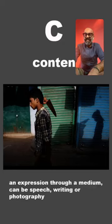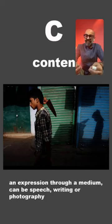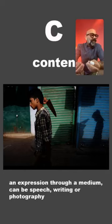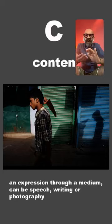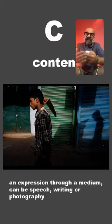After B comes C, which is very important: C is content. Content and expression through a medium can be speech, writing, or photography. We are photographers — we want to feel the moment, to be in the moment. Content is nothing but how you want to express yourself in the picture. So aesthetics, background, and content are all critical to making a picture.